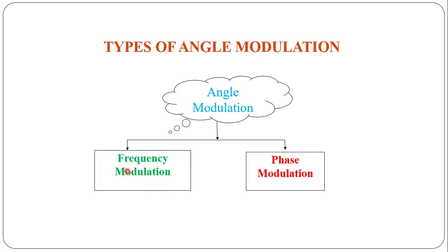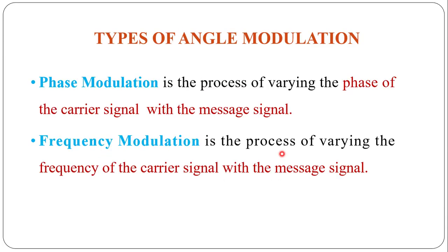There are two types of angle modulation: frequency modulation and phase modulation. Frequency modulation is when the frequency of the carrier signal is varied with respect to the message signal. Phase modulation is when the phase of the carrier signal is varied with the message signal. Both are commonly called angle modulation.